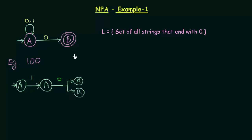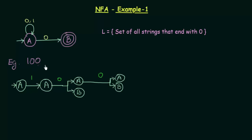On getting input 0, A goes to either A or B. Now we are in these two states. My next input is again 0. A on getting input 0 goes to A and B. And what about B? B on getting input 0 goes nowhere — there is nothing mentioned, so B goes to Phi.